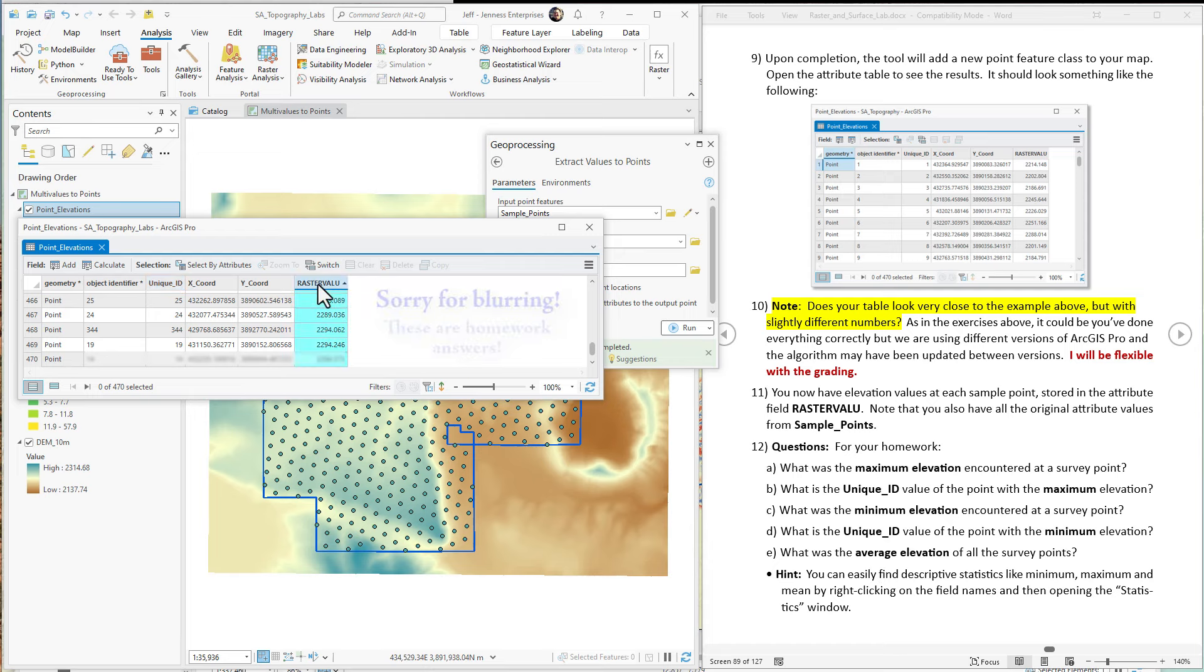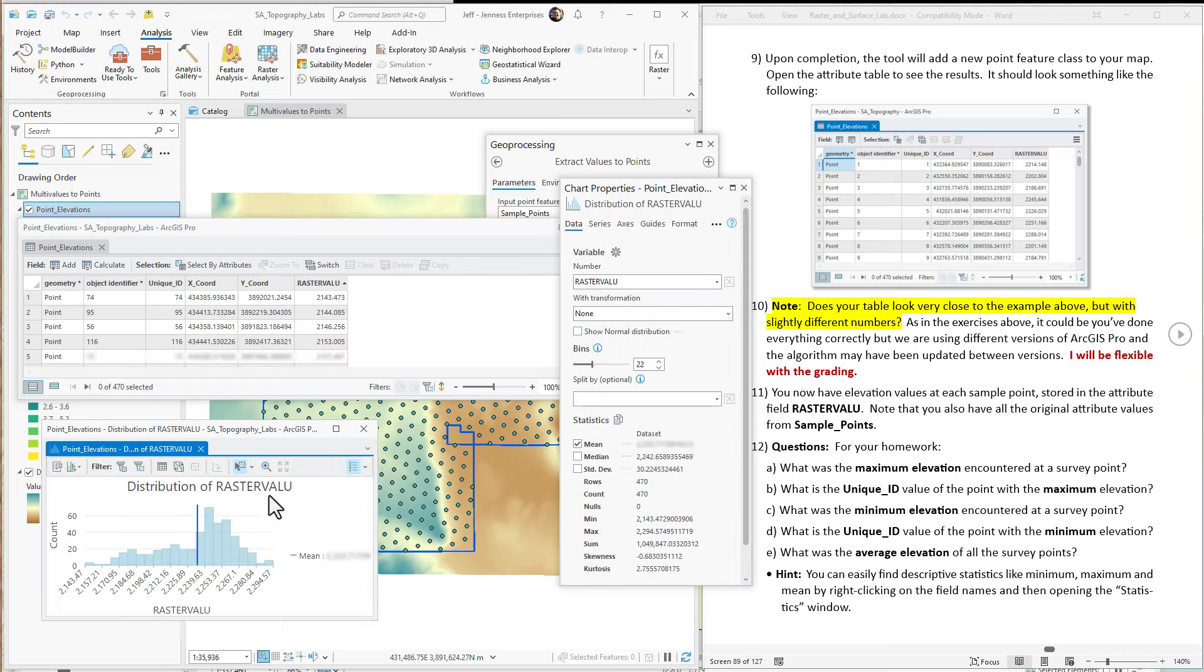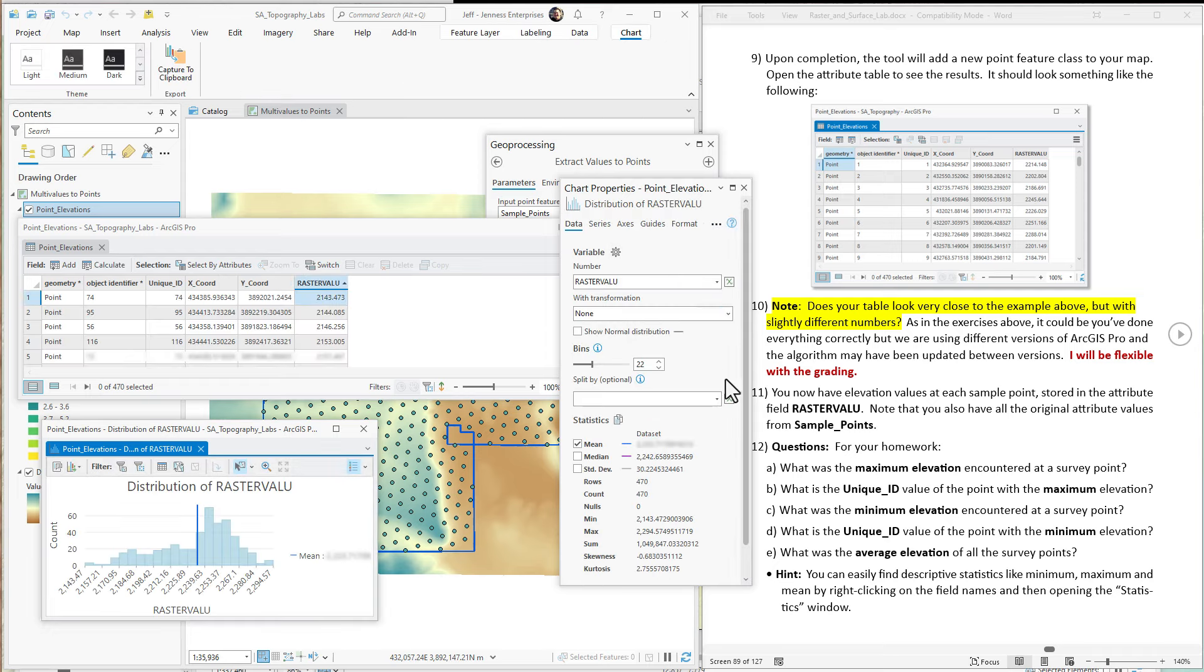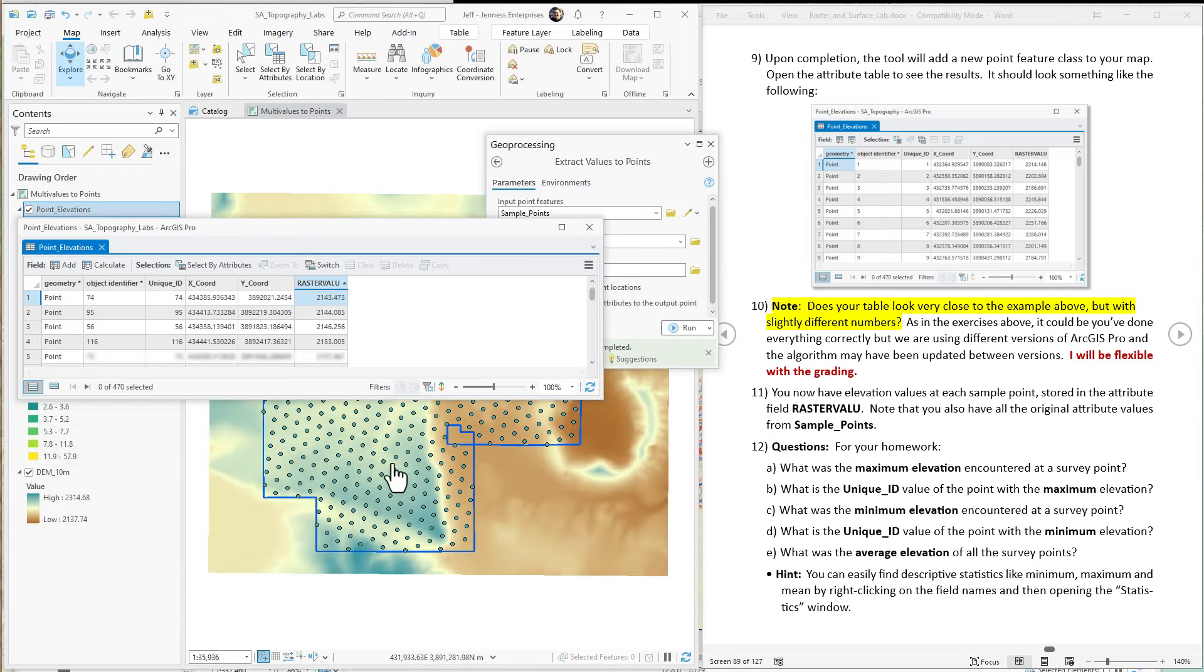This opens up the little histogram and the table here, and the average elevation is right here in the mean. So this is the average elevation right here. So easily enough, we found a bunch of elevation statistics from all these points.